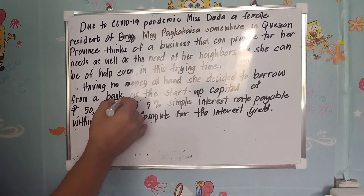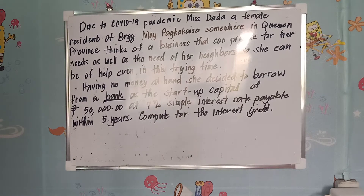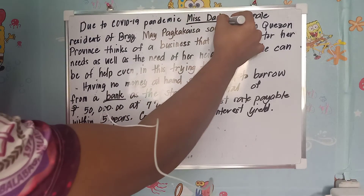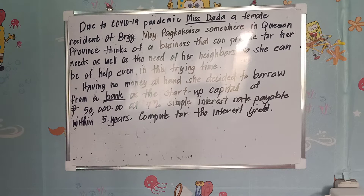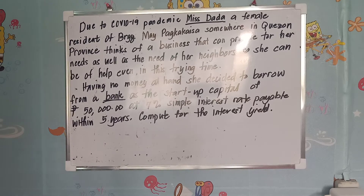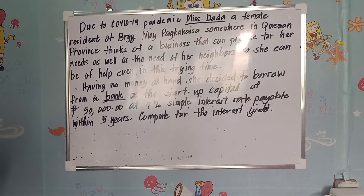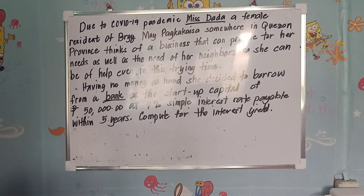Therefore the lender or creditor is the bank. Miss Dada borrowed the money, so Miss Dada is the borrower, or what we call the debtor. The borrower or debtor is a person or institution who owes the money or avails of the funds from the lender. It is also possible that the borrower is an institution or company, and the lender is another company, institution, or even a person who lent to another person.